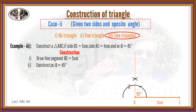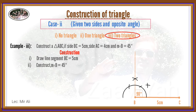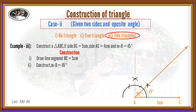Taking the center, draw arcs with the same radius. From point B, draw a ray at the 45 degree angle direction.